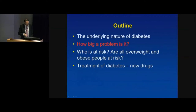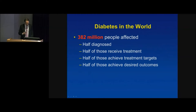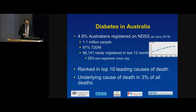Almost 400 million people are affected by diabetes worldwide. When it comes to diabetes, it's really the rules of halves: half are diagnosed, half of those receive treatment, half of those achieve their targets, and half of those achieve their desired outcomes. In Australia, almost 5% of Australians are on the national diabetes scheme — over a million people — with 87% having type 2. Almost 100,000 new registrations occur every 12 months, with 263 people diagnosed every day.